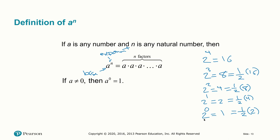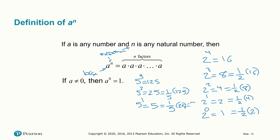This works consistently for any non-zero base. For example, with base 5: 5 cubed is 125, 5 squared is 25 — one-fifth of 125, 5 to the 1 is 5 — one-fifth of 25. So 5 to the 0 should be one-fifth of 5, which is again 1. No matter what non-zero base you use, the zeroth power equals 1.